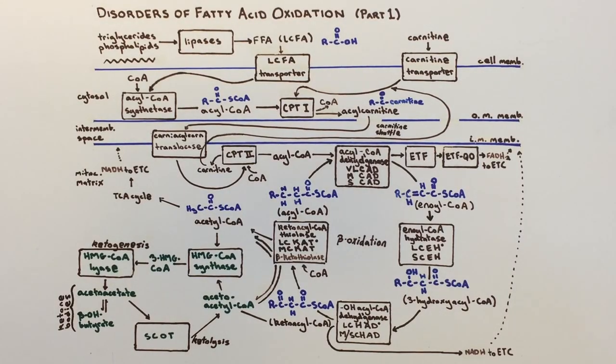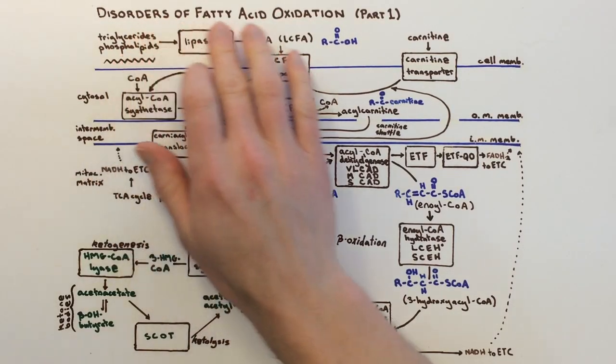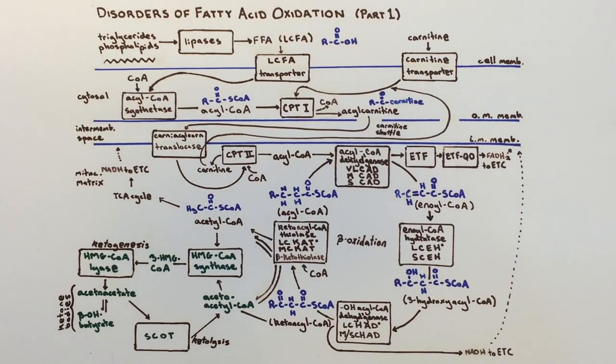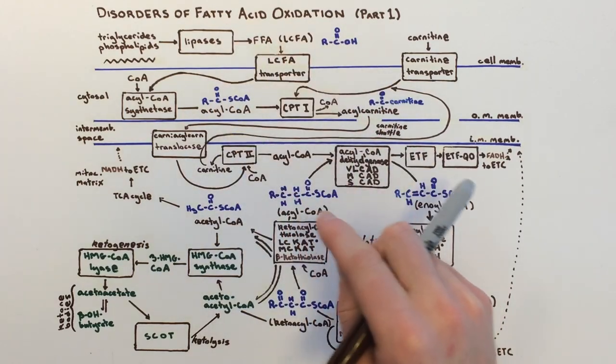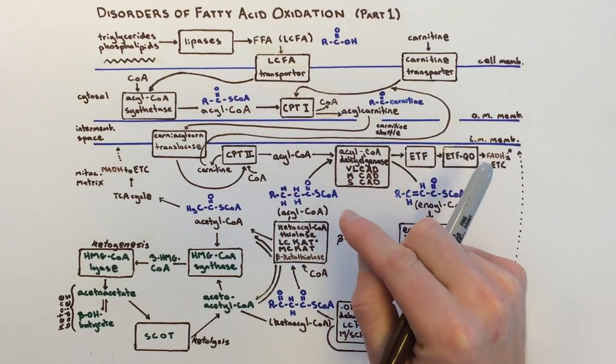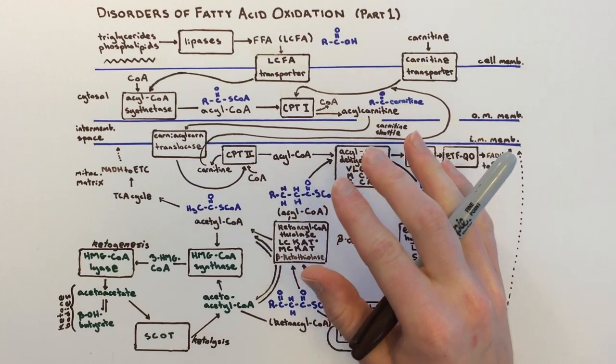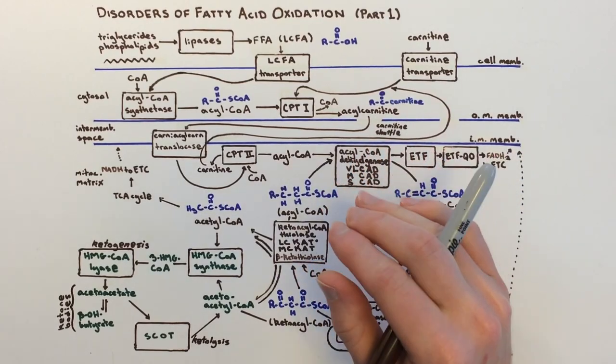Greetings. This is a quick medical genetics lecture about the disorders of fatty acid oxidation. This is an important category of metabolic disorder in which the body has difficulty breaking fatty acids down and using them for energy.